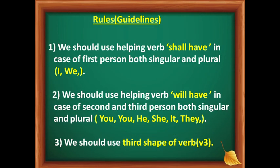Let's go to the guidelines or rules on how to construct sentences in this tense. First guideline: we should use the helping verb 'shall have' in case of first person, both singular and plural — that is, I and we. Second rule: we should use the helping verb 'will have' in case of second and third person, both singular and plural — that is, you, he, she, it, and they.